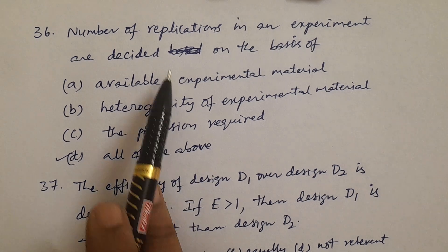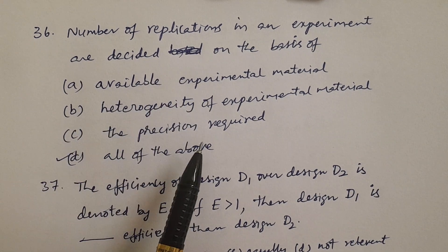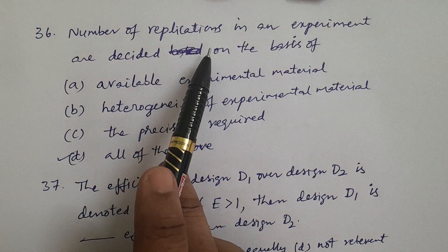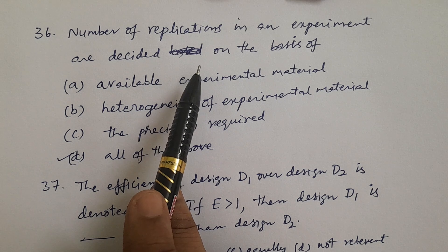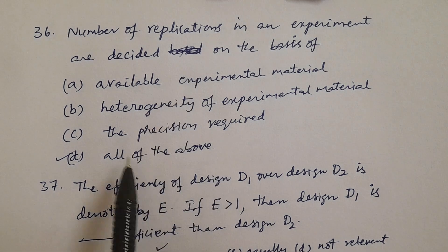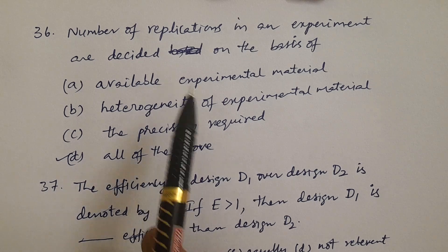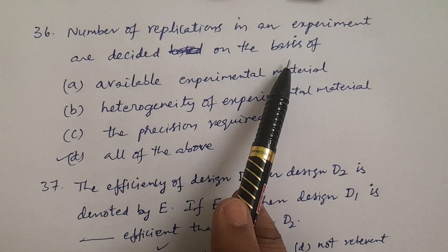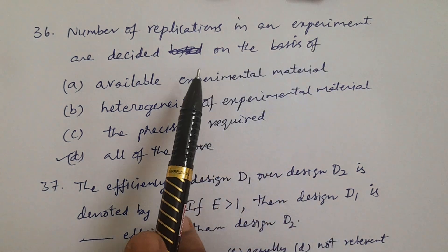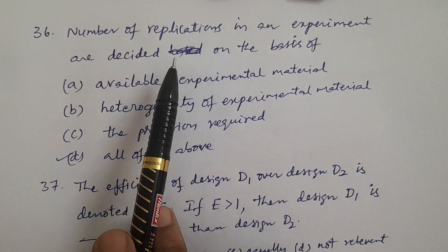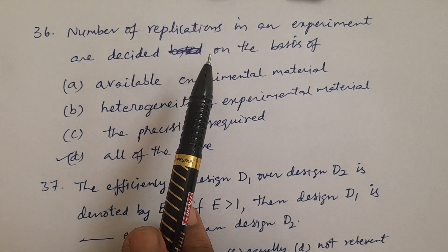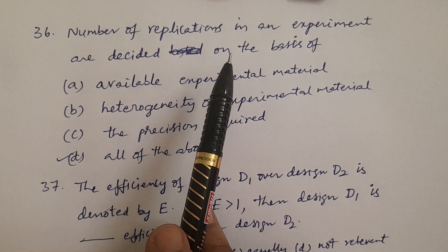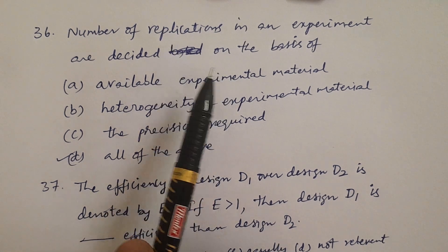Based on all these three points — available experimental material, heterogeneity of experimental material, and precision required — we decide how many replications are going to be considered in a particular experiment. The answer is D.